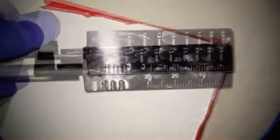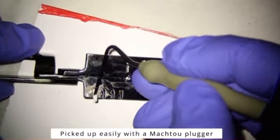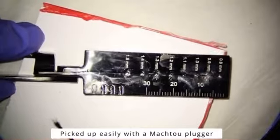Once the bioceramic putty is packed into the pelletformer, these pellets can be easily picked up with a Mach 2 plugger and placed within the apical third of the tooth.